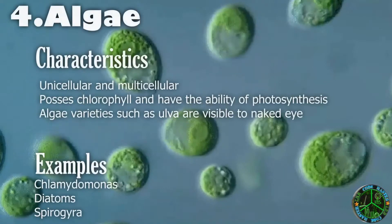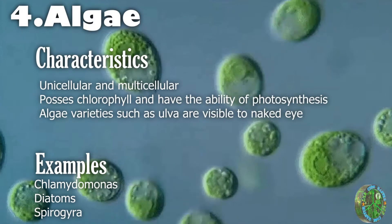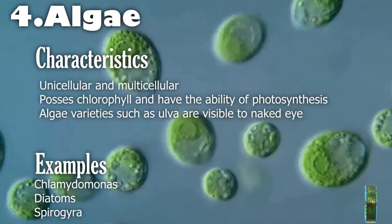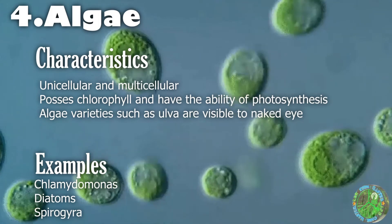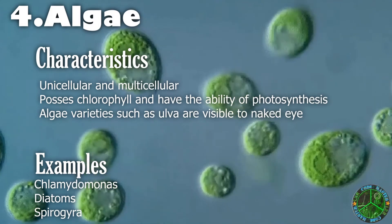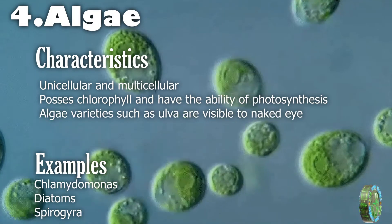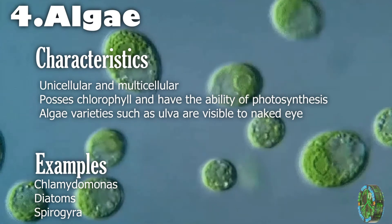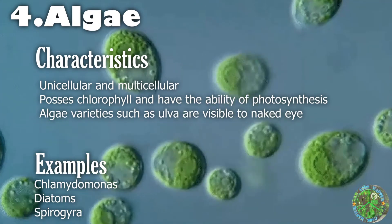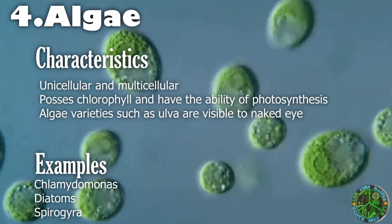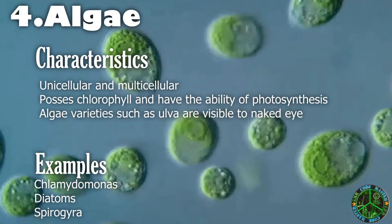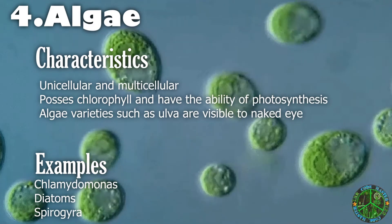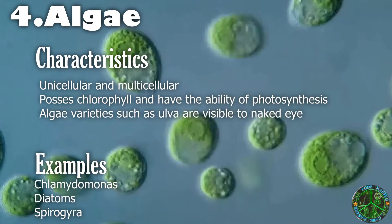Number four: algae. Characteristics of algae are unicellular or multicellular species that possess chlorophyll and have the ability of photosynthesis. Algae varieties such as Ulva are visible to the naked eye. Examples for algae are Chlamydomonas, diatoms, and Spirogyra.